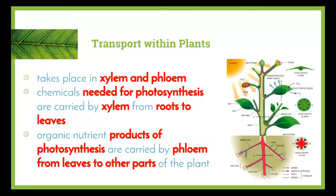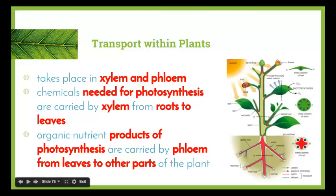The chemicals needed for photosynthesis are carried by the xylem from the roots to the leaves, and the organic products of photosynthesis are carried by the phloem from the leaves to the other parts of the plant.